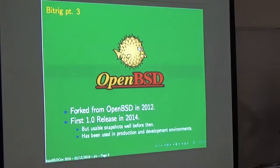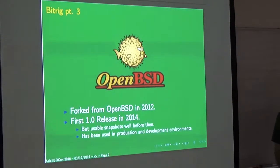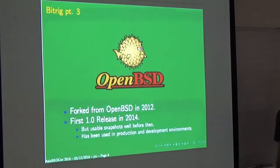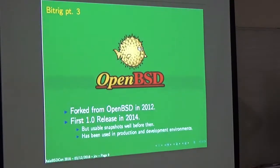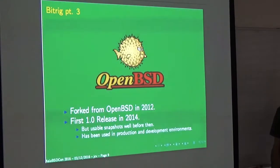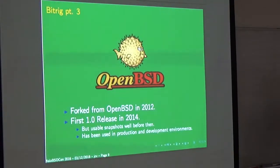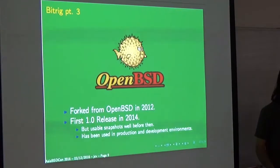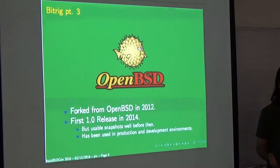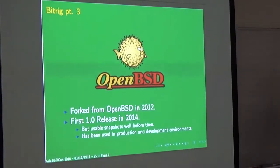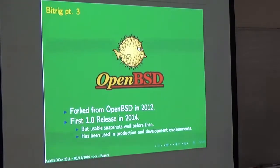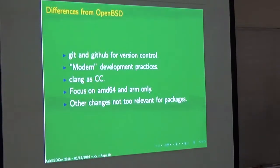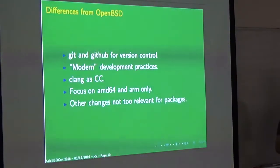We've been using BitRig in production systems, and some of us have been using it as our personal system for a while. It is actually a usable system. Despite infrequent releases, we do snapshots which are not blessed as releases but are the actual usable units of computing. So what do we do that's different and that ends up giving me problems when I have to do ports for it?